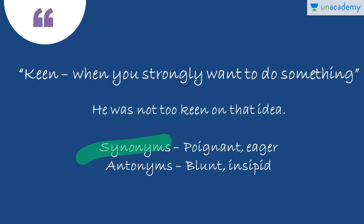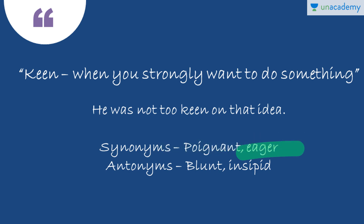Synonyms for keen: the first one is poignant. Poignant means evoking a keen sense of sadness or regret — when you are touched by someone, like pitiful or mournful. Those are words synonymous with poignant. The next synonym is eager, which means when you strongly want to do or have something, you strongly want to do or have something.